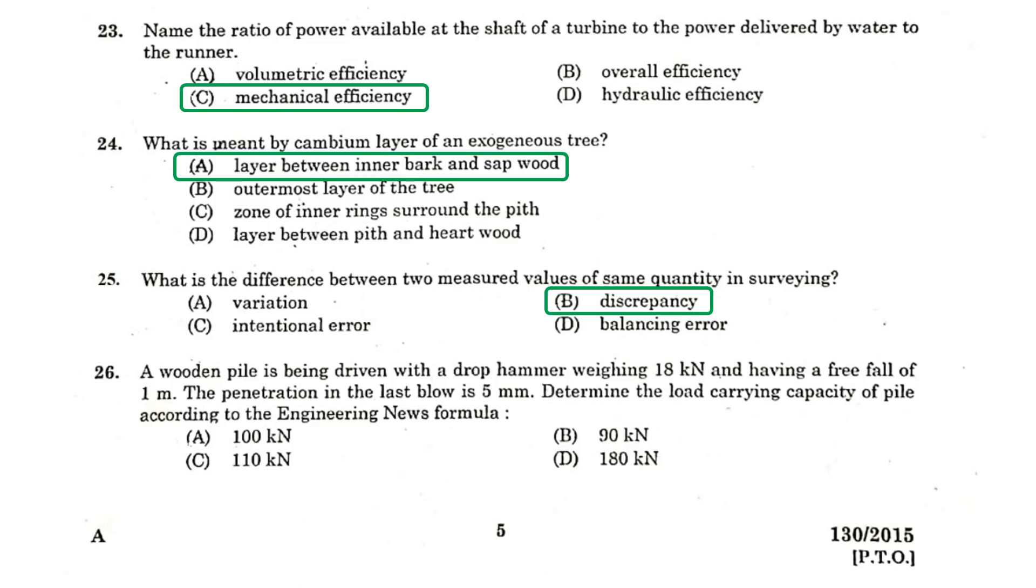A wooden pile is being driven with a drop hammer weighing 18 kN and having a free fall of 1 m. The penetration in the last blow is 5 mm. Determine the load carrying capacity of the pile according to the Engineering News formula.